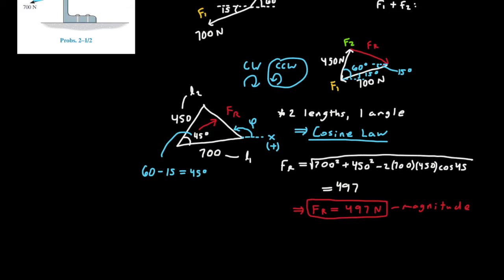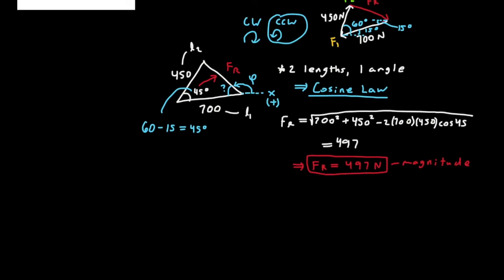Well, one thing we can do is try to find what this angle between the 700 newton force and FR is. Now in order to find that angle, we can go ahead and use the sine law. And before proceeding, I'm just going to go ahead and call that angle alpha.